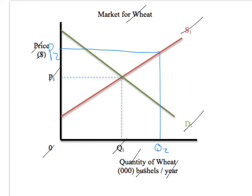Why is it called a floor? The government is preventing you from getting to P1, and what they want is a minimum price above that, so P2 is going to be above equilibrium. Therefore, if you're a producer and you want to lower the price, you can't. A price floor prevents producers from lowering the price beyond a government-set minimum price.